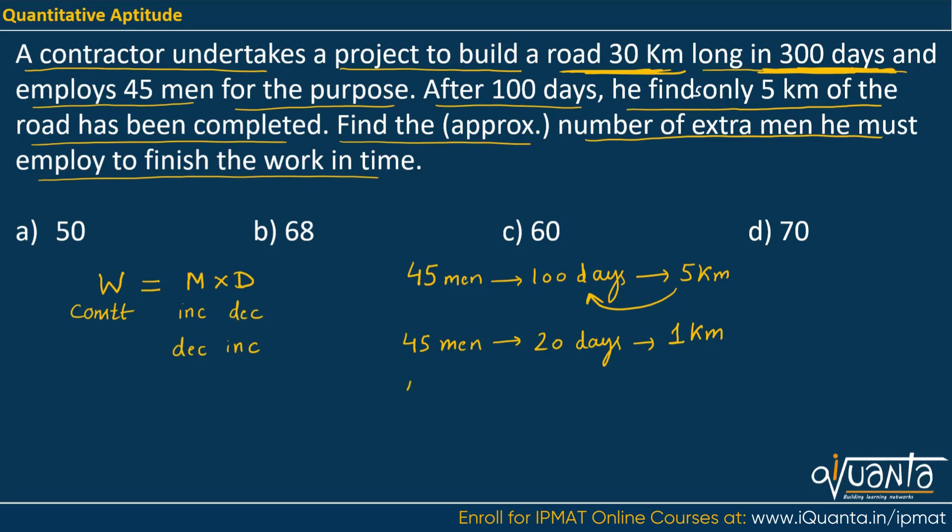Or I can say that 45 into 20 man days this will be equal to 1 kilometer of road. Or we can say that 900 man days will be equal to 1 kilometer of road.